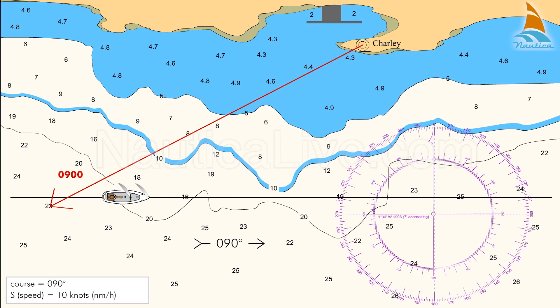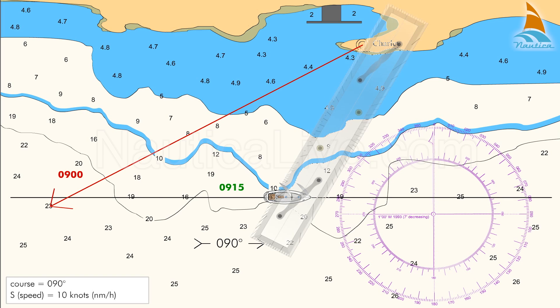We observe the Charlie radio tower and when the new bearing reads 030 degrees or 60 degrees from the bow, we note the time 0915. Now convert the compass bearings to true bearings and plot it on the chart.